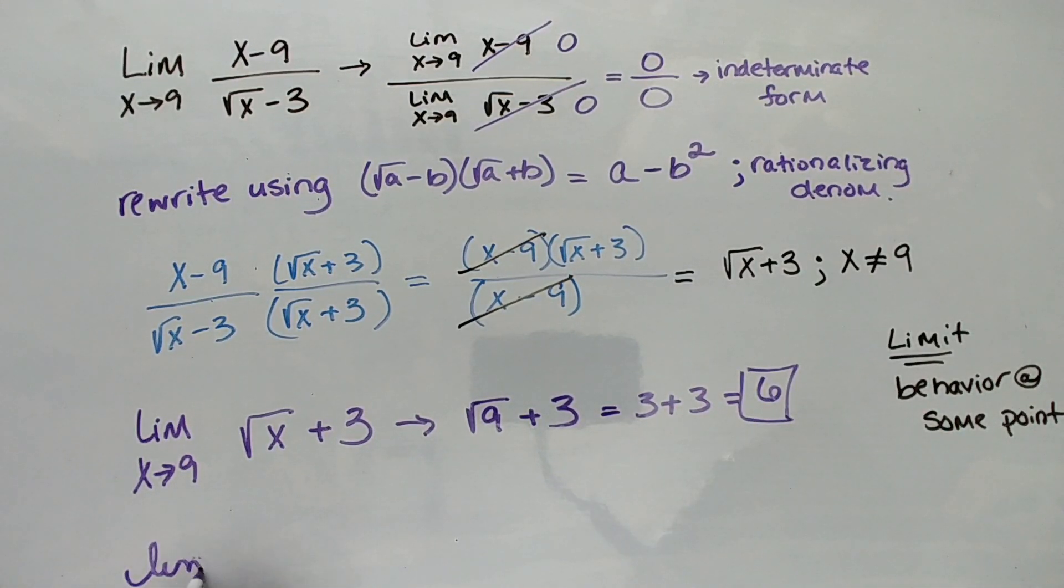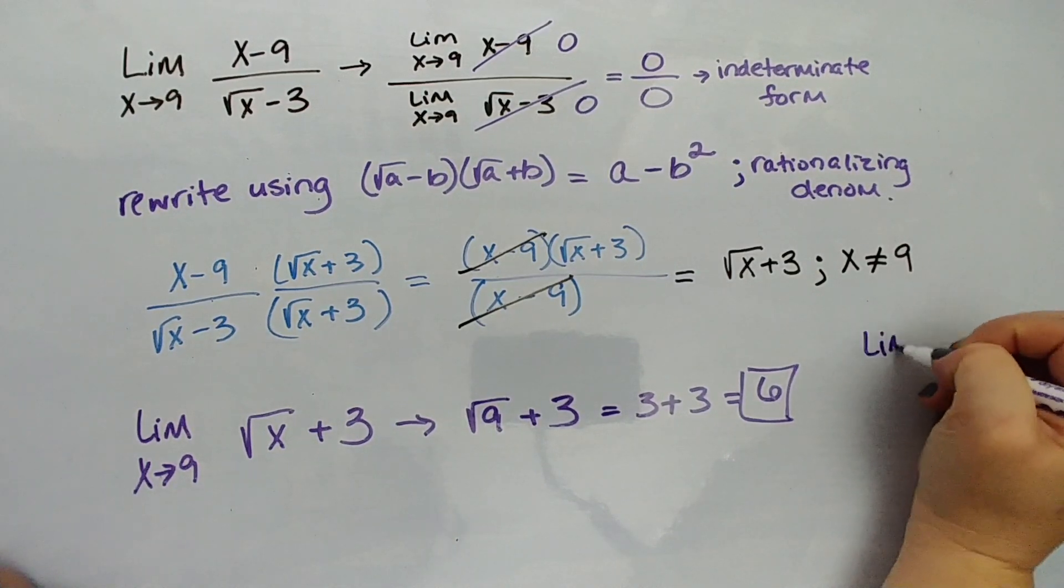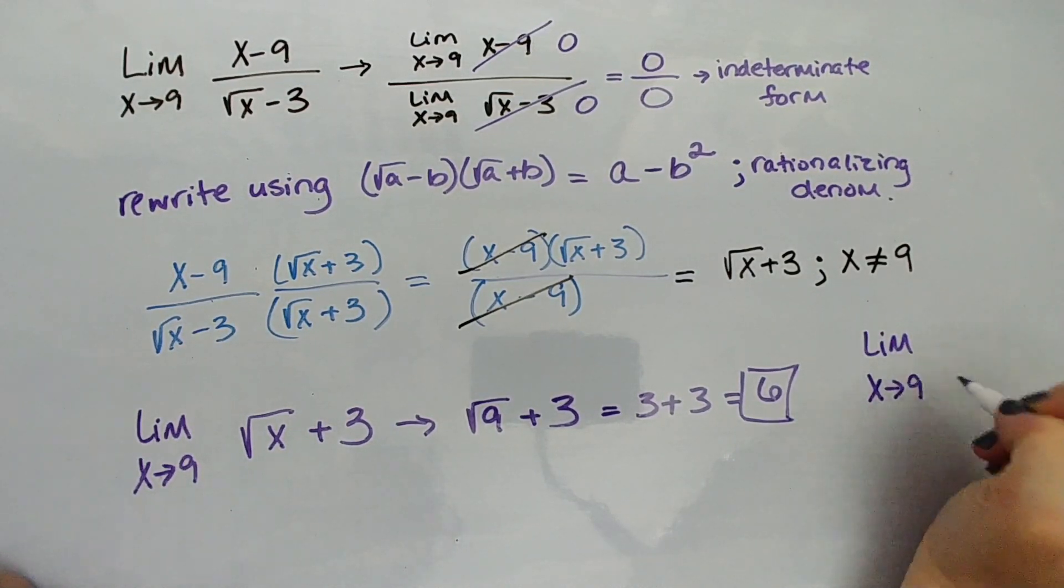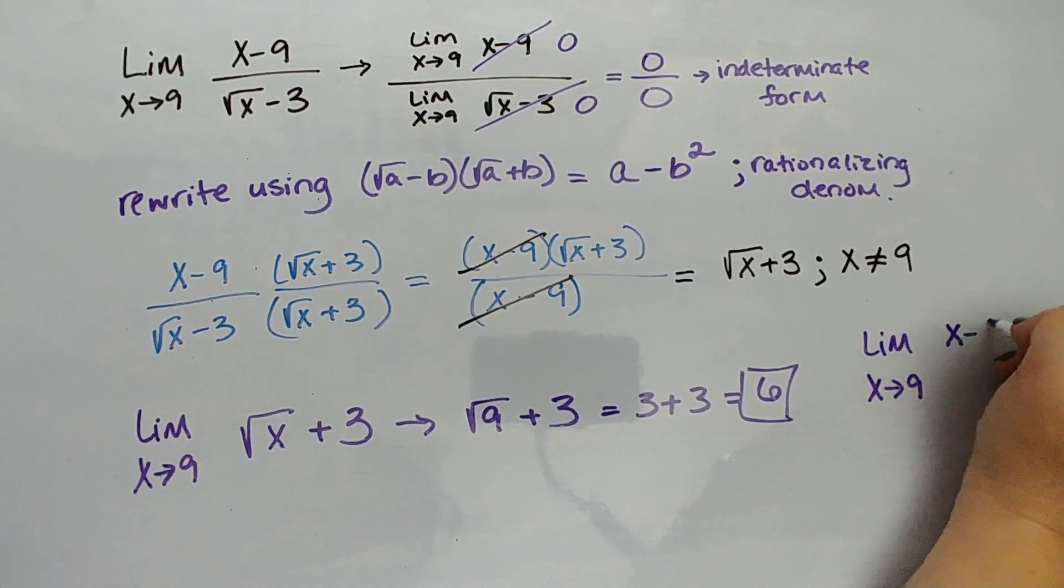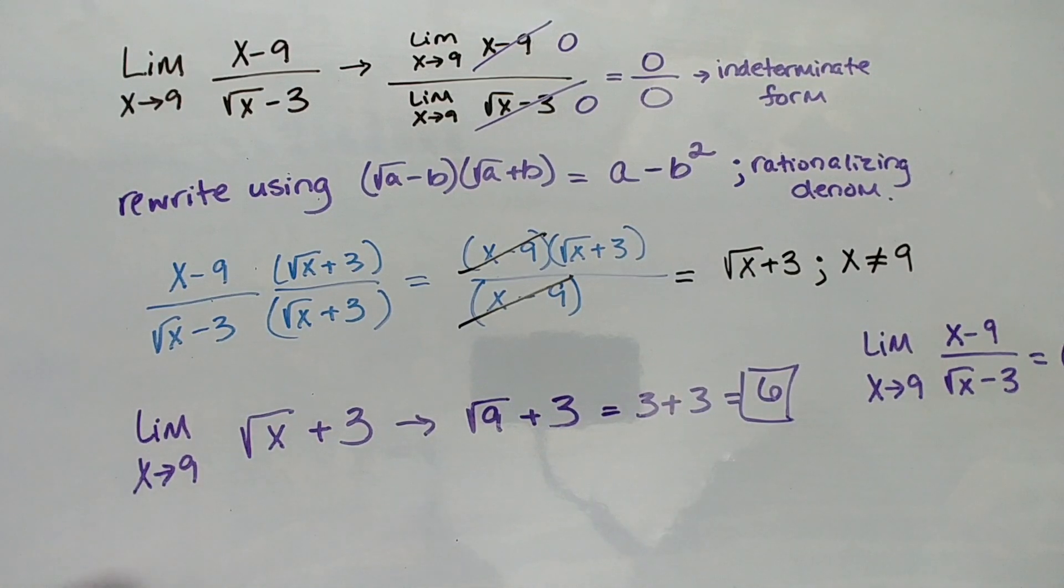So the limit as x approaches 9 for (x-9) over (√x - 3) equals 6.